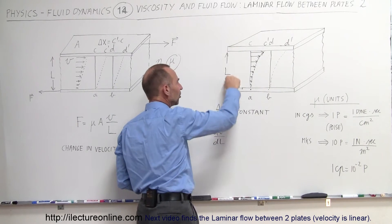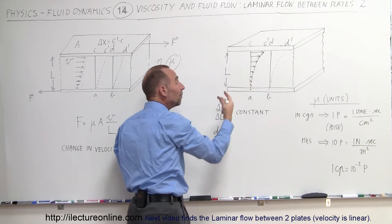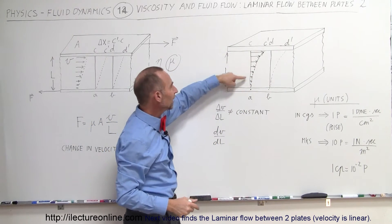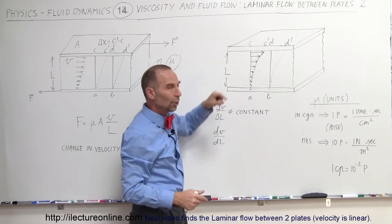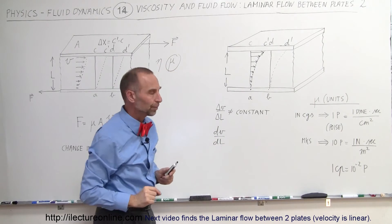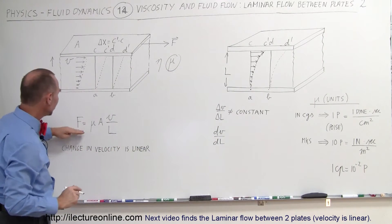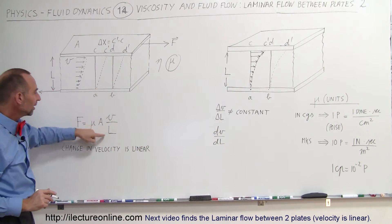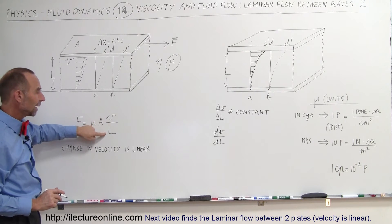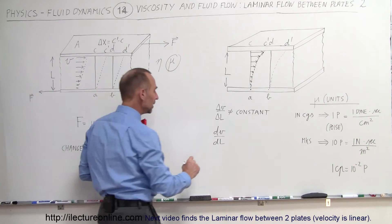So as a function of position the velocity will be some amount and we can say that at any point in the fluid we have a velocity and the change of the velocity changes as a function of position. Therefore we can take this equation right here instead of thinking the velocity divided by l being a constant is now going to be this.